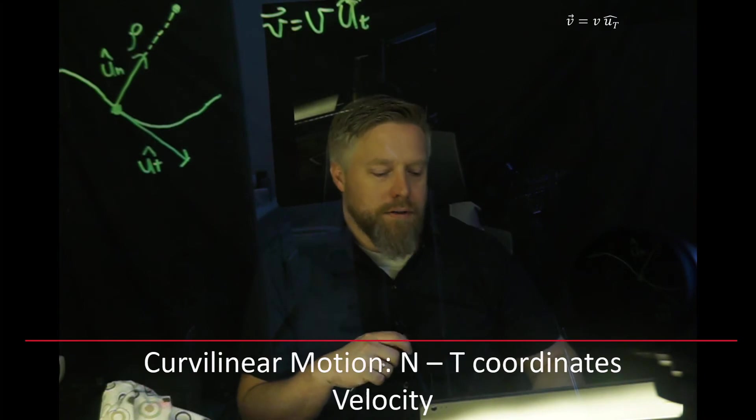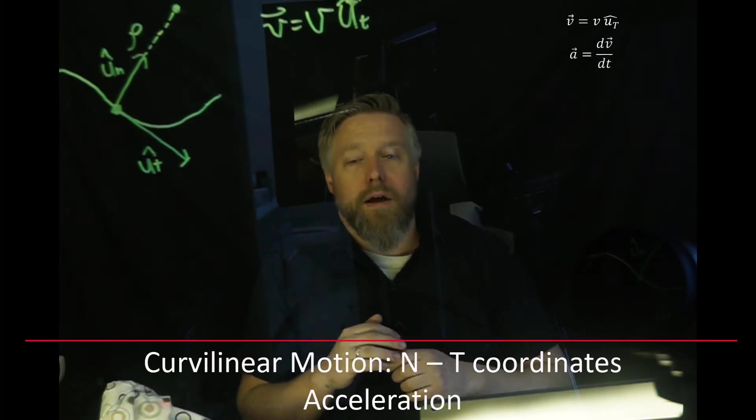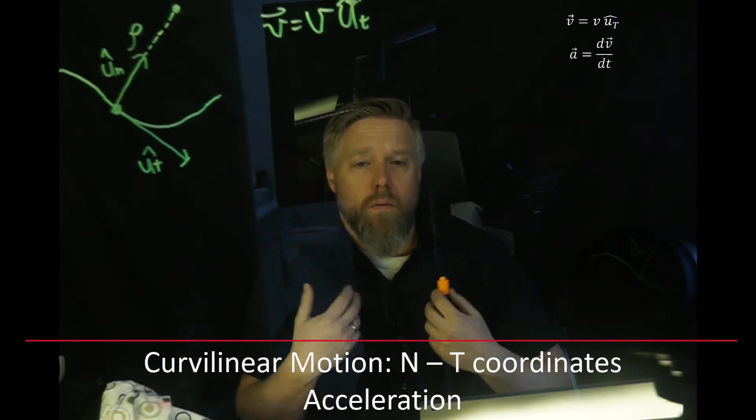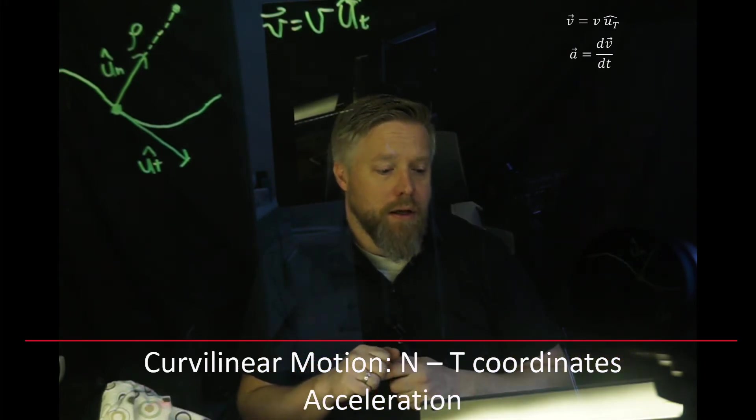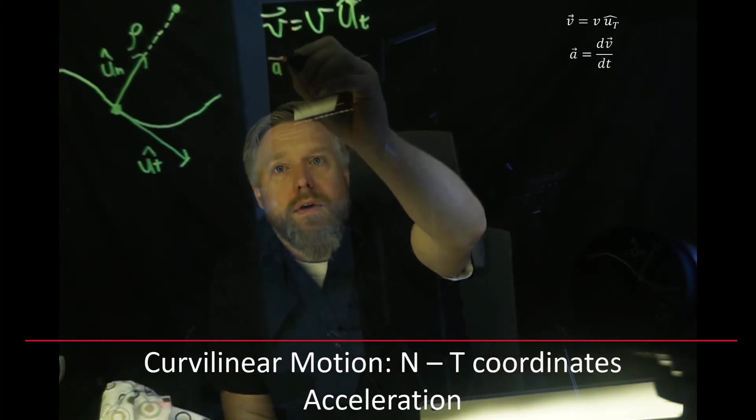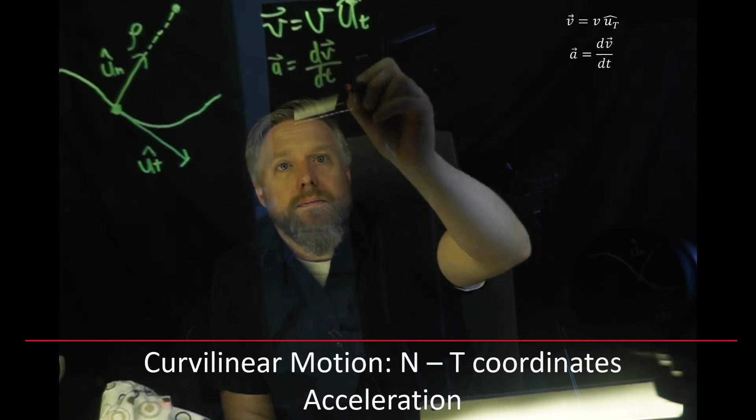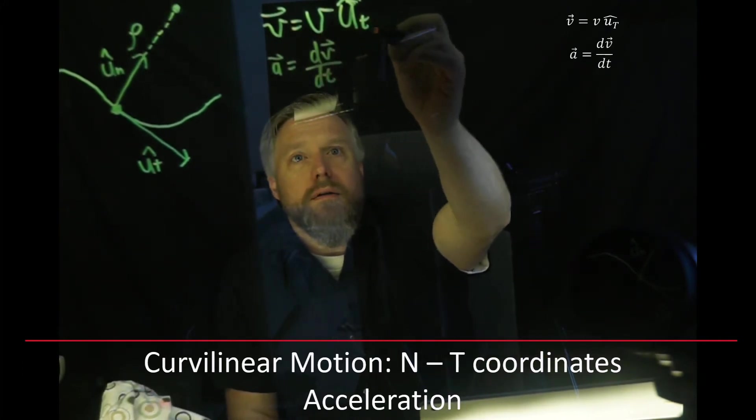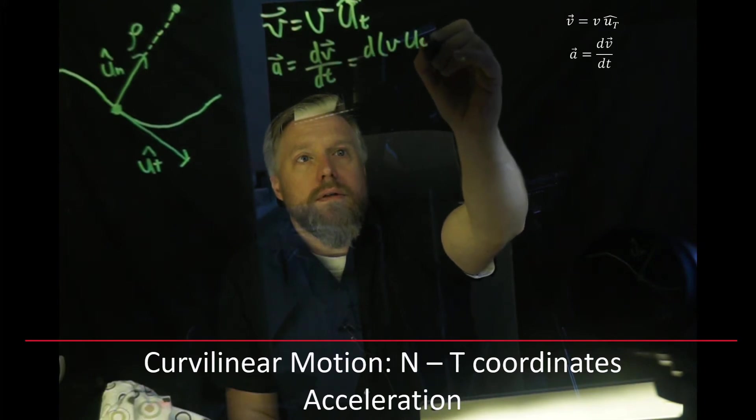Now let's talk about acceleration. For acceleration, we have that same equation for velocity, the magnitude of velocity times UT, but we also know our base kinematic equation that relates acceleration to velocity, where the acceleration is equal to dv/dt. Acceleration as a vector is equal to the derivative of velocity as a vector with respect to time.